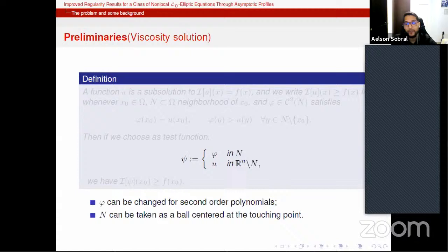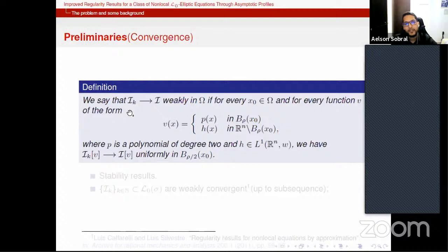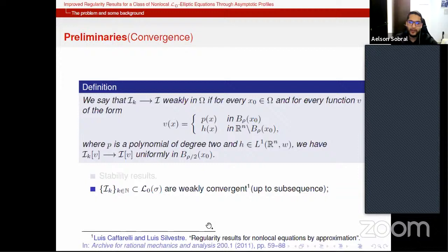Another definition that is going to be important is the notion of weak convergence. And we say that a sequence of nonlocal operators Ik converges weakly in a domain omega if, for every point in omega and every test function of this form here, where P is a second-order polynomial and H is a function in this weighted space, we have uniform convergence in half of this ball here. And this notion of weak convergence is important to establish, for example, stability results and compactness result due to Caffarelli and Silvestre. For example, if we have a sequence of, a general sequence of operators, of L0 elliptic operators, they establish that they are always weakly convergent in this sense here, up to subsequence.